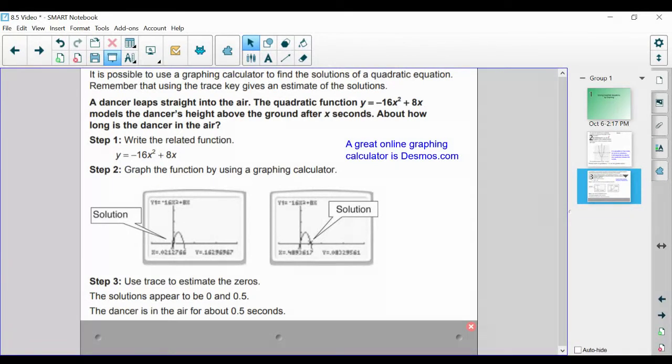If you want to use your online graphing calculator, by all means go for it. Those will give us more precise answers. If we physically have a graphing calculator in our hands, we're going to be using the trace button to estimate our answers. We could always go back and substitute in those x values to verify and make sure we end up with the true statement, just like we did in the previous example.